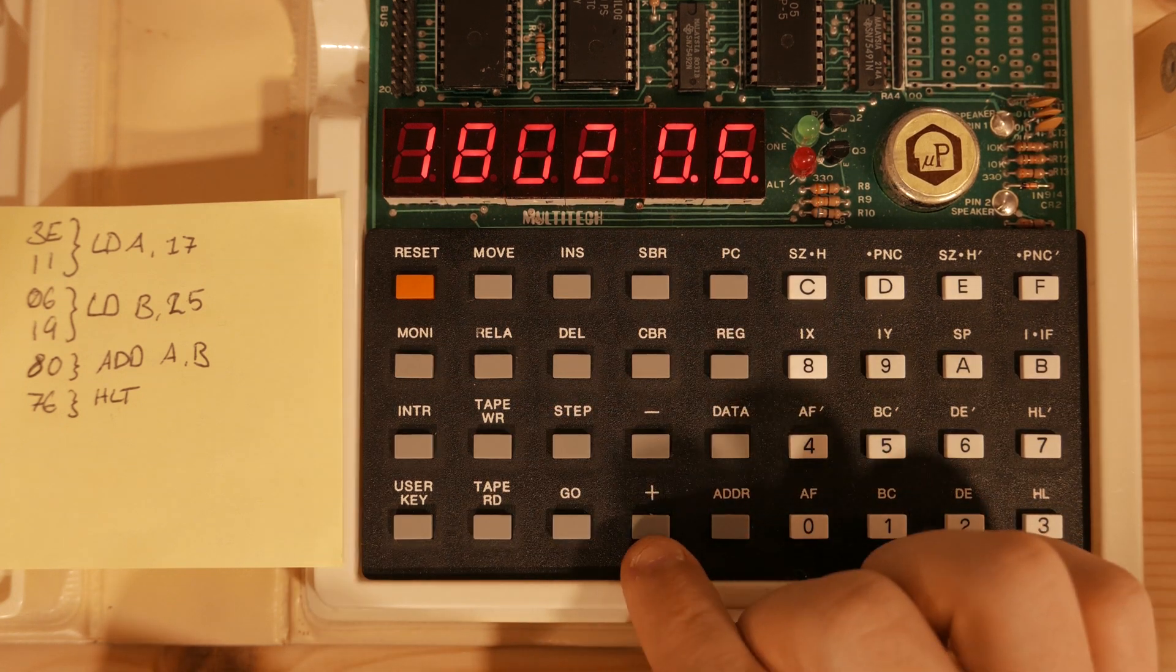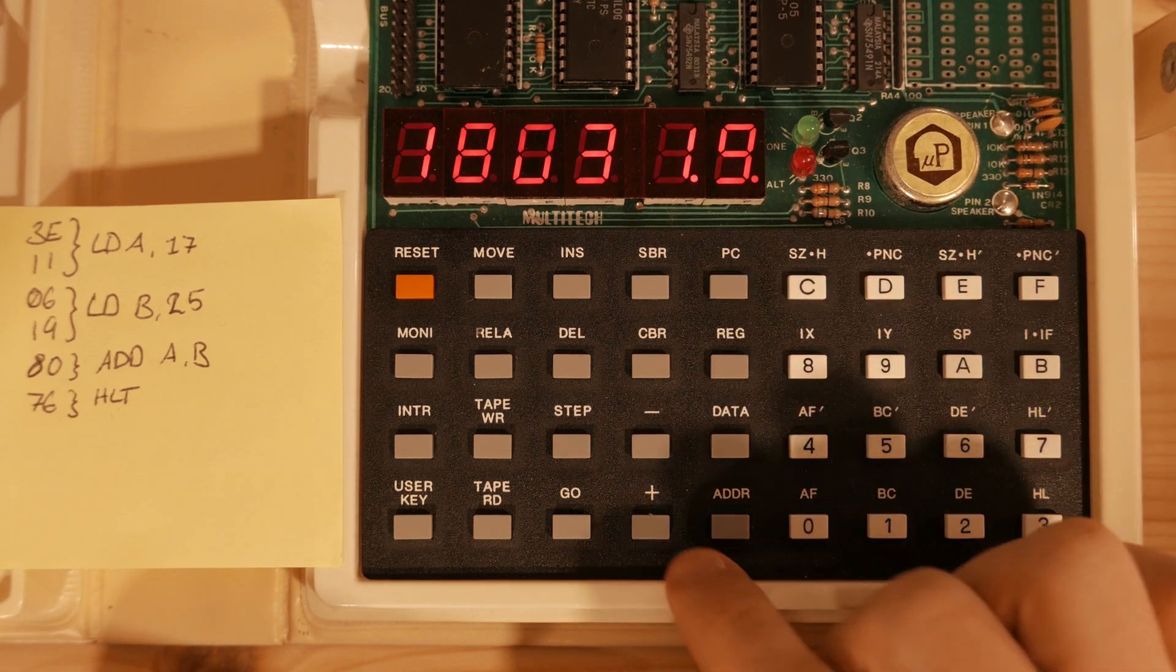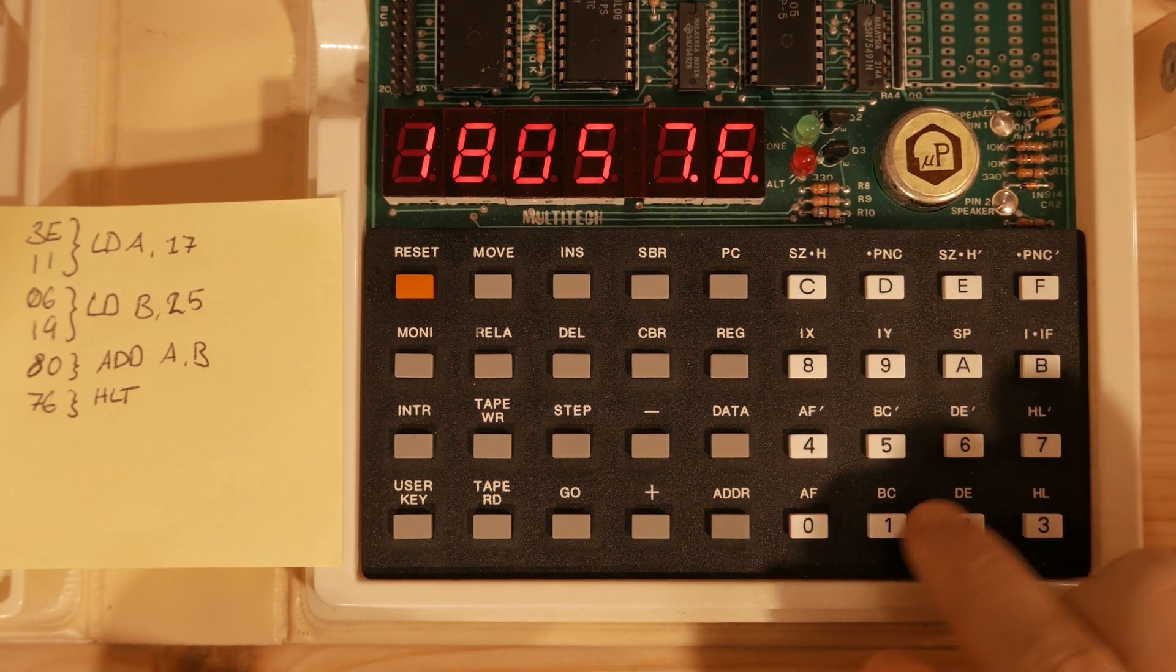That means load B. Then the value we are loading into B is the value 19. Then we do 80 to add, and then 76.